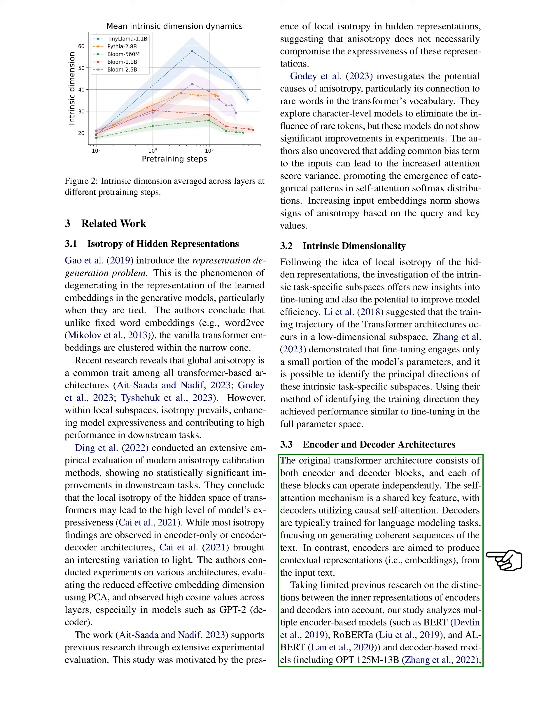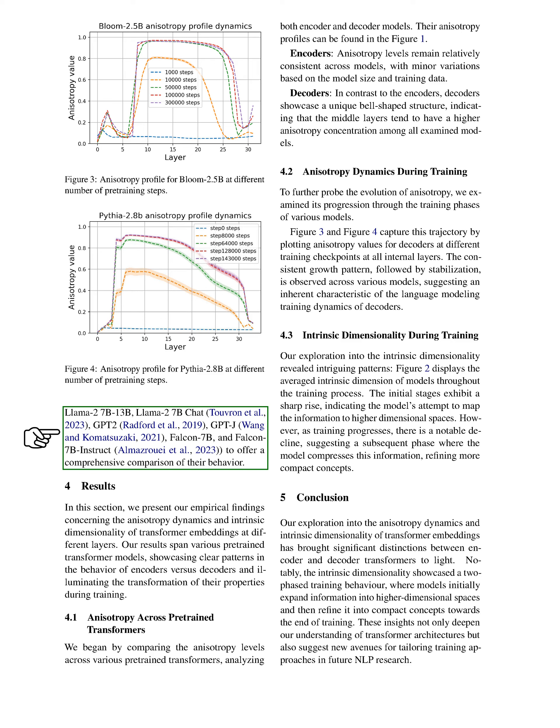Lastly, let's talk about the architecture of encoders and decoders. The original transformer architecture consists of both encoder and decoder blocks, which can operate independently. Decoders are typically trained for language modeling tasks, focusing on generating coherent sequences of text, while encoders are aimed to produce contextual representations, or embeddings, from the input text. We've analyzed multiple encoder-based models such as BERT, RoBERTa, and ALBERT, and decoder-based models including OPT-125M/13B, LLaMA-2 7B/13B, LLaMA-2 7B Chat, GPT-2, GPT-J, Falcon-7B, and Falcon-7B Instruct, to compare their behavior.